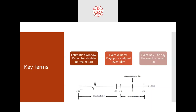The estimation window would be different for each study, but for this particular example the estimation window is from minus 250 to minus 11 — that is, from 11 days prior to the announcement day back to 250 days prior. The next key term is the event window, which is some days prior to the event day and post the event day. In this diagram, the event window is from minus 10 to plus 10.